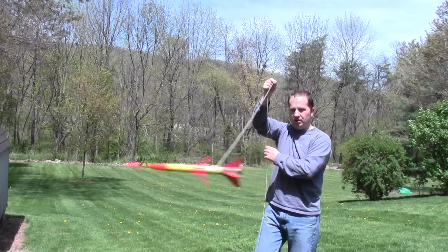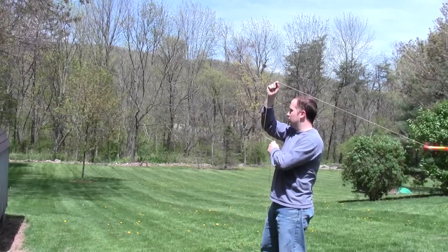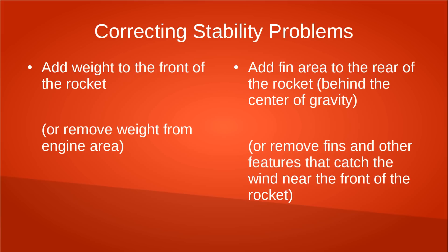If you find that the rocket refuses to fly straight, or especially if it tumbles around as it goes through the air, that is a sure sign that it's not stable. If your rocket isn't stable, you probably already know how to fix that. The most common way is to add a little bit of weight to the nose cone, which brings the pivot point forward. The other thing you can do is make the fins larger. You could also do the reverse — remove weight from the rear, or remove fin area from the front — but most rockets don't have fins in the front unless they are decorative. So the most common fixes are to add weight to the nose cone or to make the fins larger.